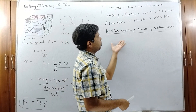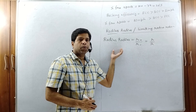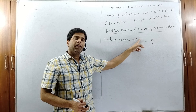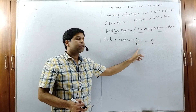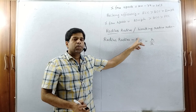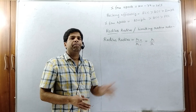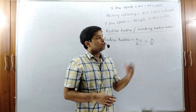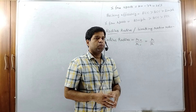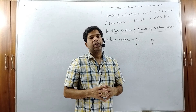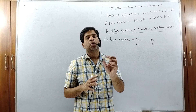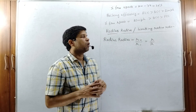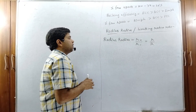Limiting radius ratio. The radius ratio is the ratio of the smaller particle to the bigger particle — generally the cation is smaller and the anion is bigger. So it is the radius of the cation divided by the radius of the anion. Based on this ratio, we can identify which void is occupied by the smaller particle in the crystalline system.